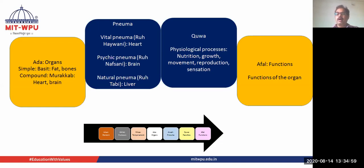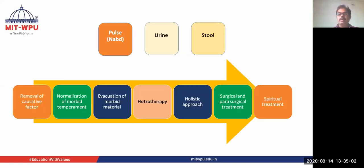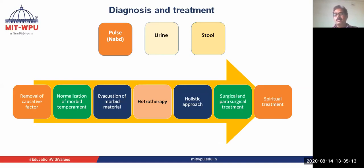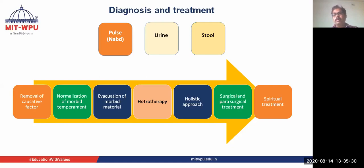These are the functions of various organs. Regarding diagnosis and treatment in the Unani system, Unani is very proficient in pulse reading, or nabz identification. From the pulse, they can identify diseases, disorders, or changes in the body. They also examine the urine — its color, odor, turbidity, and sedimentation — from which diseases and disorders can be determined. Observation of stool also reveals changes in the body.